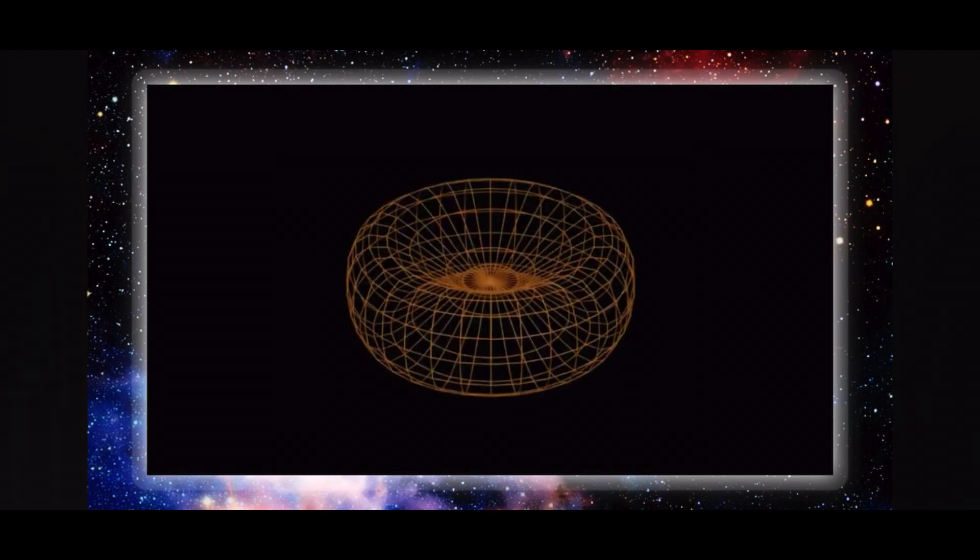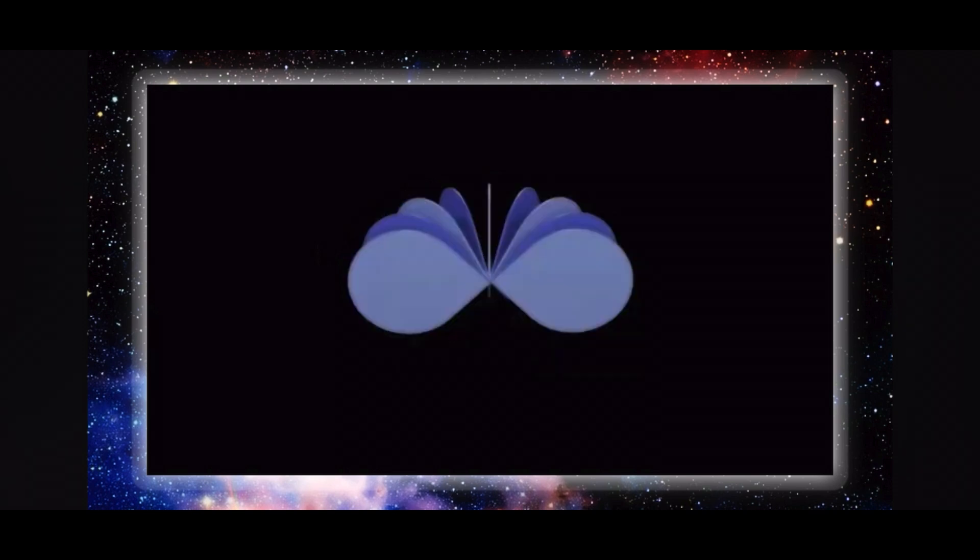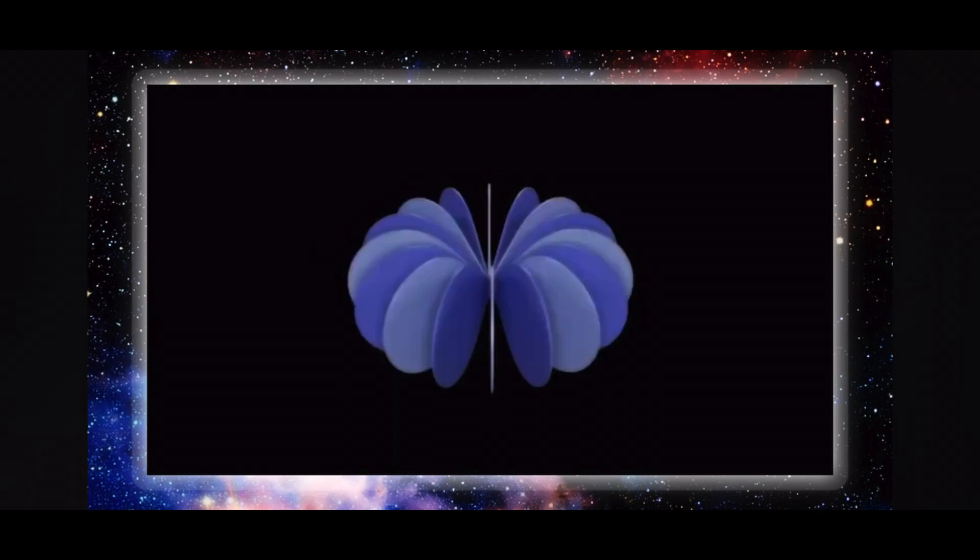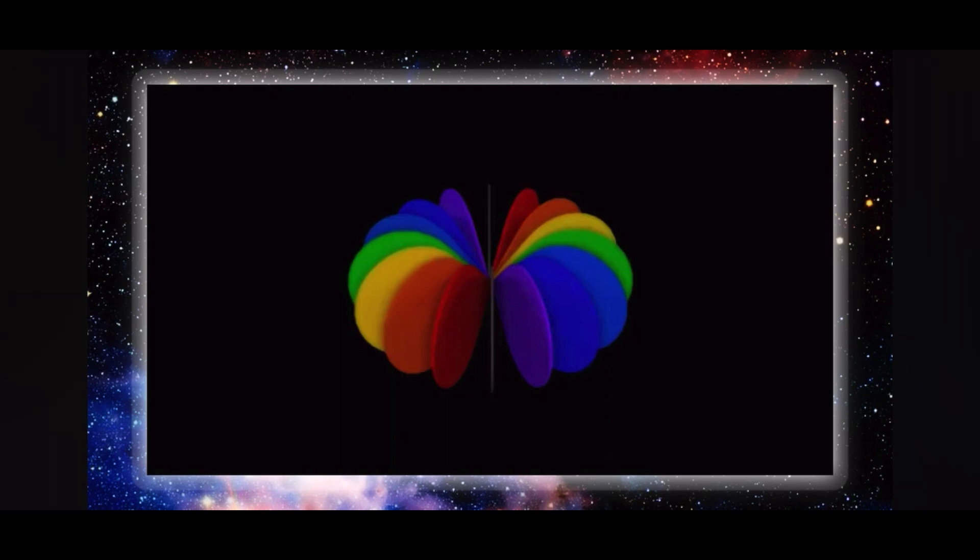We start with a 100 pi surface area imploded sphere, divided into 8 planes creating 16 points on the circumference, 22.5 degrees apart.